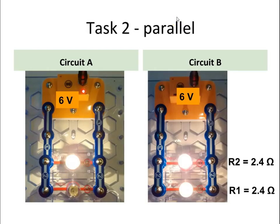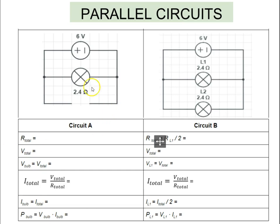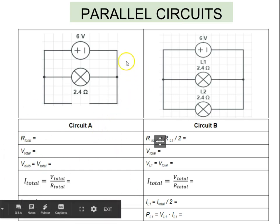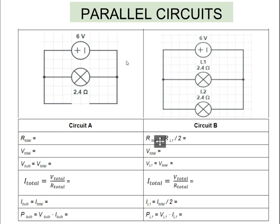Let's take a look at the parallel circuit, Task 2. You should now be on page 2 of your worksheet. Circuit A looks very familiar — the one we just looked at — so go ahead and complete that part on your own. You should be able to put in R_total = 2.4 ohms, V_total = 6 volts, V_bulb = 6 volts, then calculate the current and the power of the bulb. Take a moment to complete that.